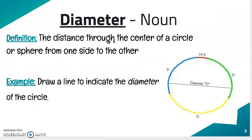Diameter. It's a noun. The definition is the distance through the center of a circle or sphere from one side to the other. Example: Draw a line to indicate the diameter of the circle.